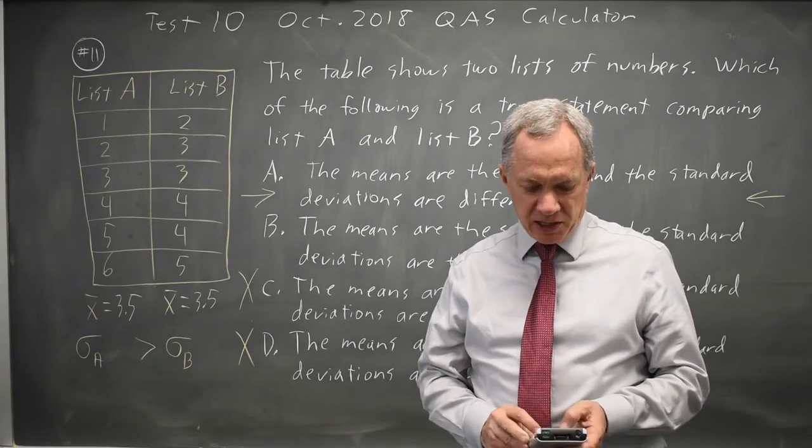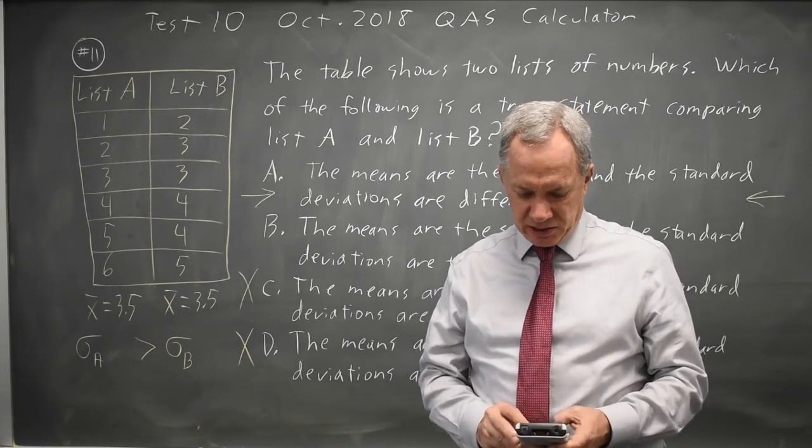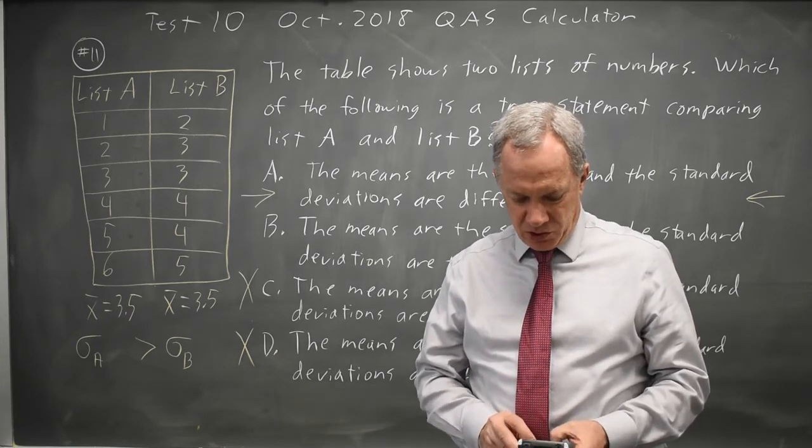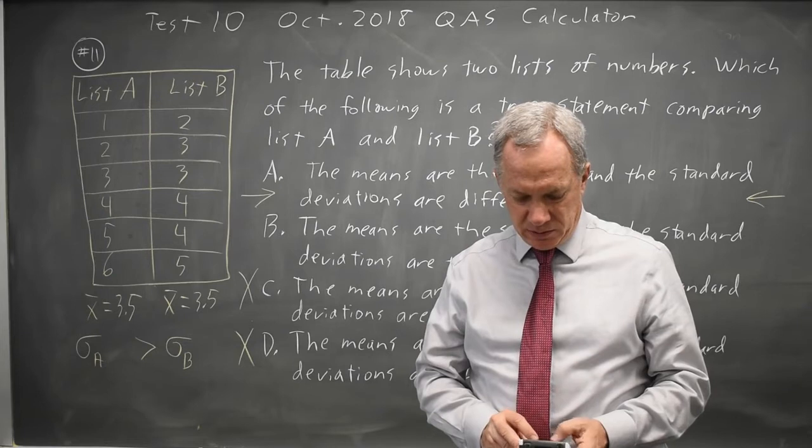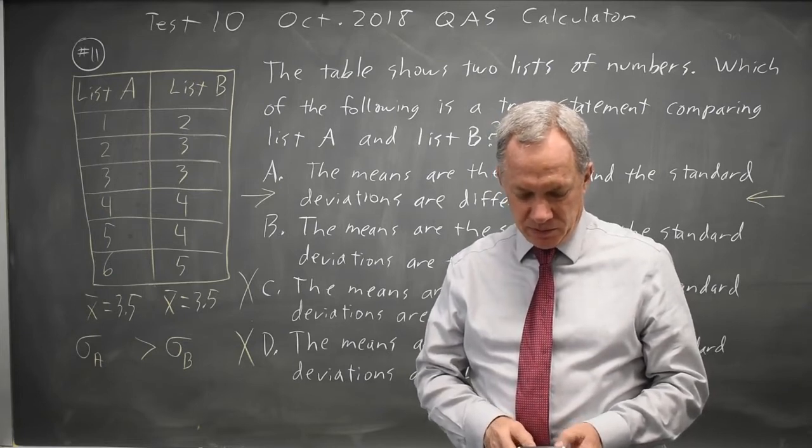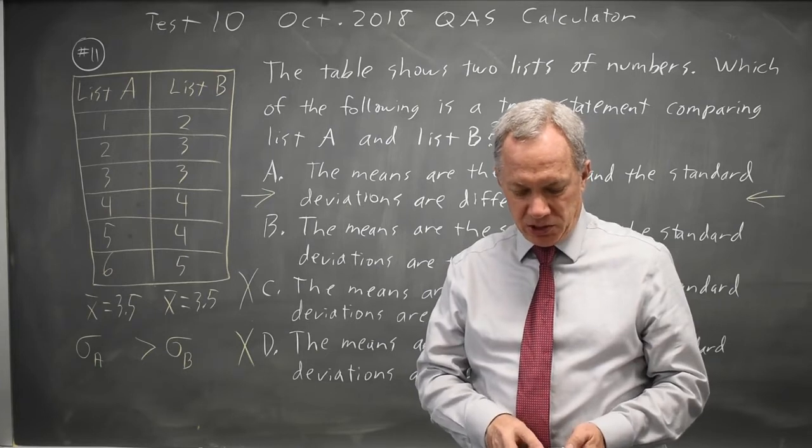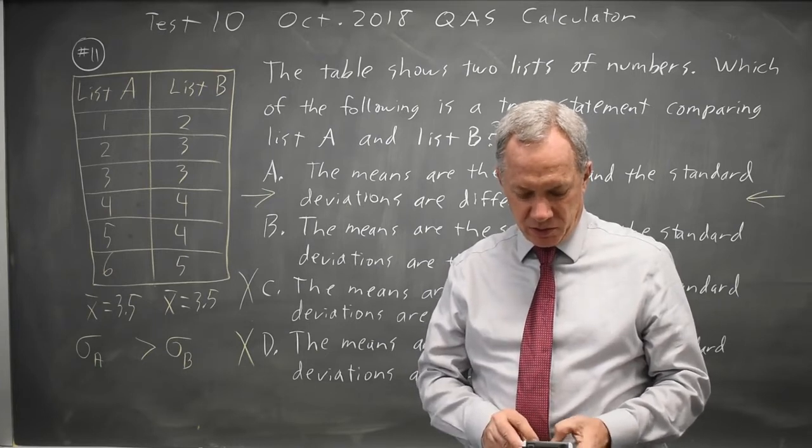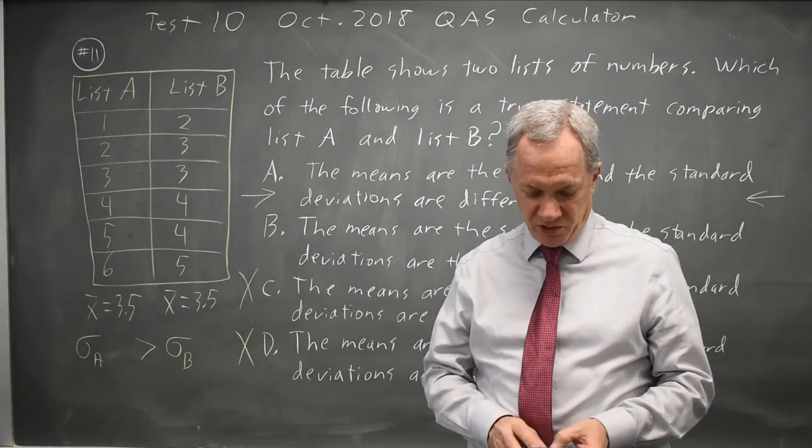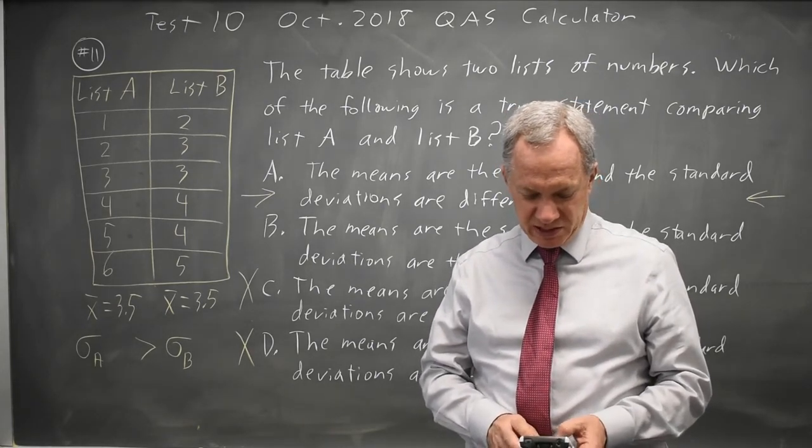But on the graphing calculator, you can go stat, edit, and list 1: 1, 2, 3, 4, 5, 6. In list 2: 2, 3, 3, 4, 4, 5. As long as your fat fingers don't slow you down, it can be pretty fast. My fingers hit the wrong keys there.